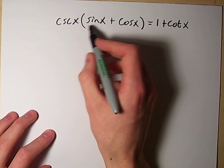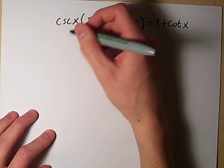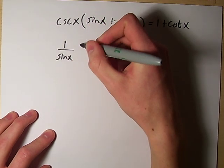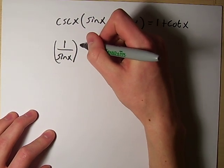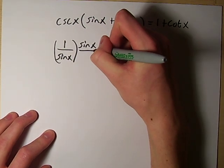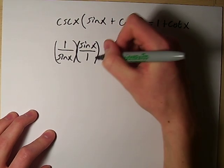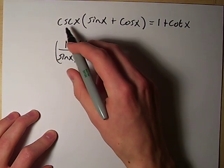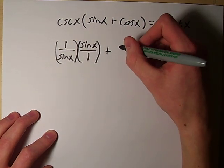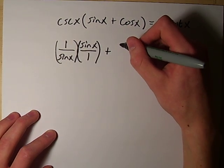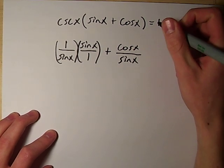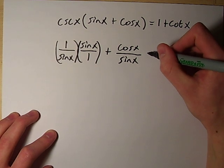So we have cosecant times sine. Well that's just going to be 1 over sine x multiplied by sine x over 1 plus cosecant x times cosine x. So that's just going to be cosine x over sine x when that's multiplied through.